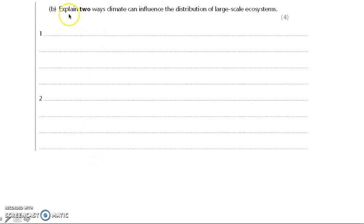Now we have a four marker, explain two ways climate can influence a distribution of large scale ecosystem. So we need two distinct points and you need to extend those. You don't extend this one twice and this one just make a point. You have to extend them each equally. So four marks. Have a go now.